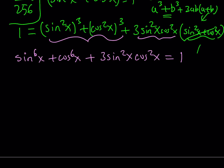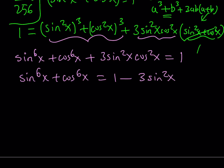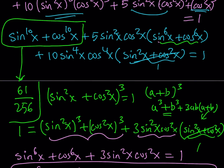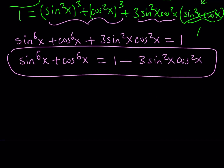I'm looking for sine x to the 6th plus cosine x to the 6th, so let's isolate that. It equals 1 minus 3 sine squared x cosine squared x. So that's one of the expressions I'll be using — I've got the sum of the 6th powers. Now I also need the product of the 4th powers and the product of the 2nd powers. The product plays an important role here.